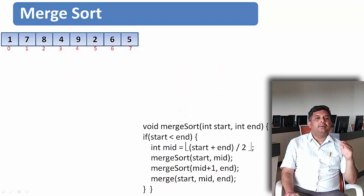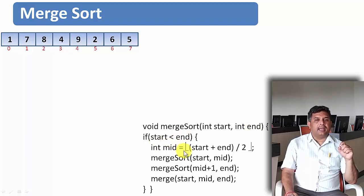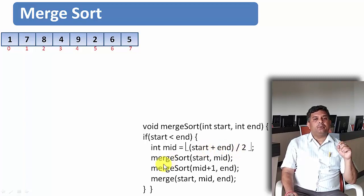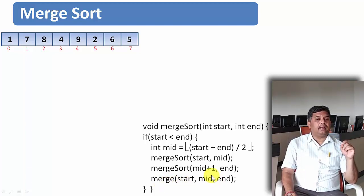Now let us apply the merge sort algorithm to actual data. The merge sort function takes parameters start and end. If start is less than end, find mid = floor((start + end) / 2). Then recursively call merge sort on (start, mid), then merge sort on (mid+1, end), and finally call the merge algorithm with parameters start, mid, and end.